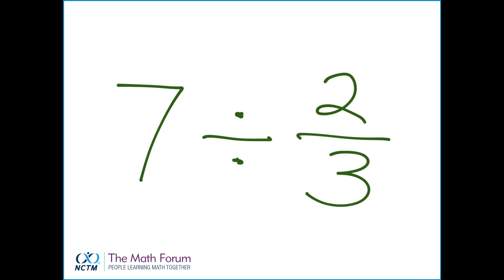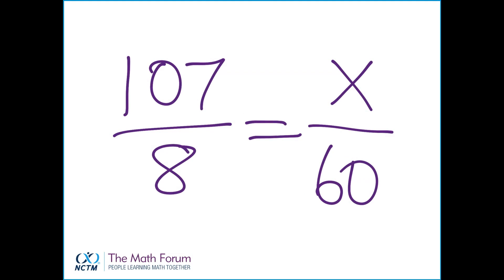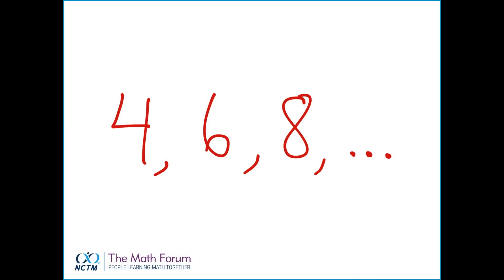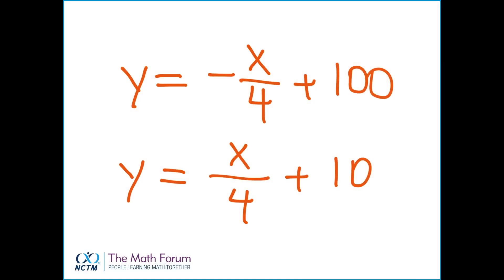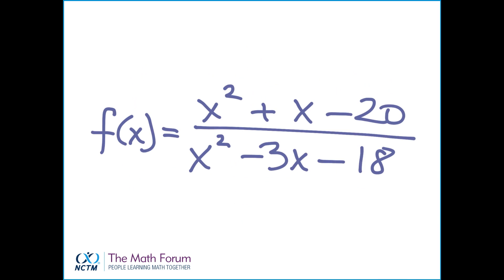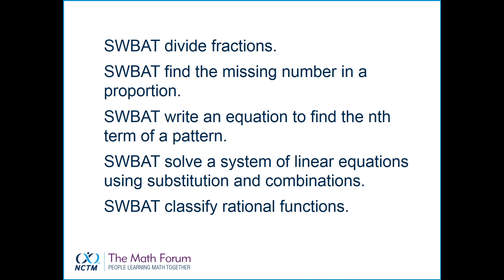Because these things are important, right? Do this division problem — that'll be really fun. Find the unknown number in a proportion. Write an equation to find the nth term of this pattern. It's important that we learn to solve linear equations by substitution and combinations. And then we could talk about how to classify rational functions, because some people do think that's important. And these are things that we absolutely want our students to be able to do — not all of them this year in the same room, but over time.